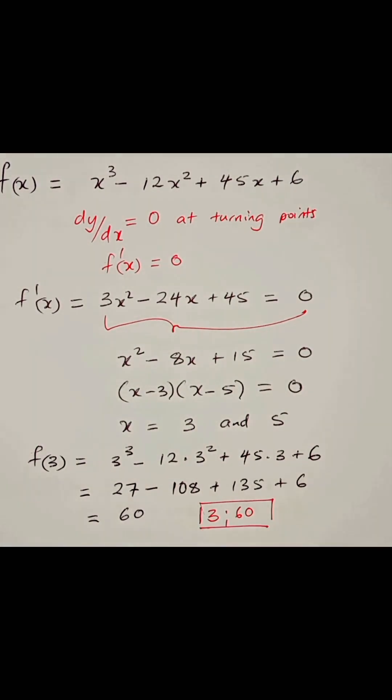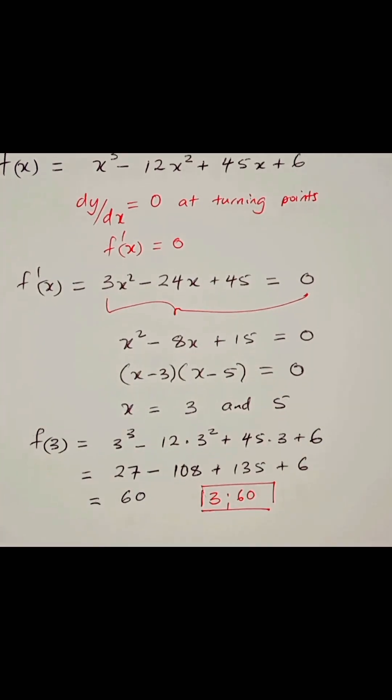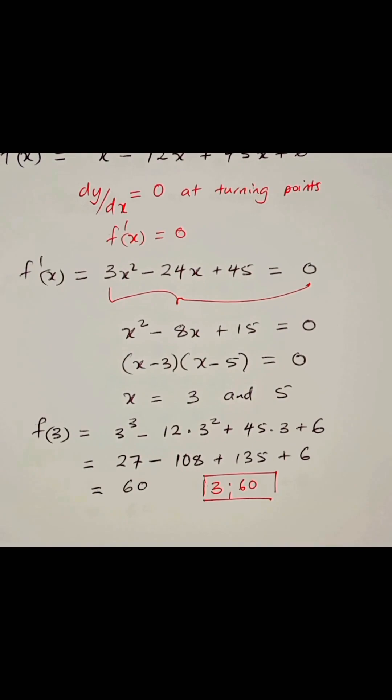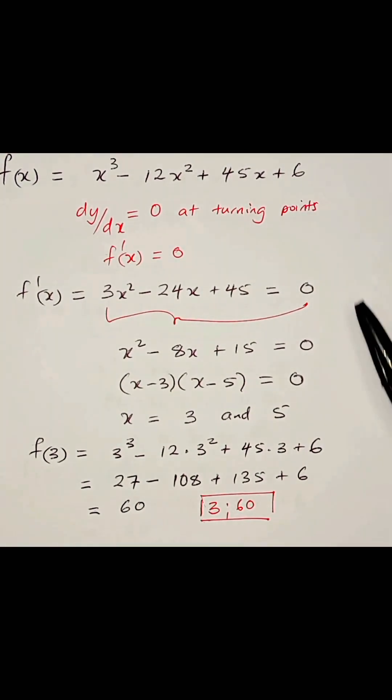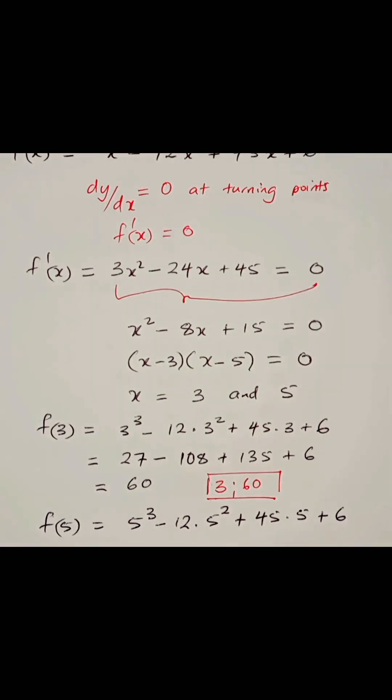So that's one of those turning points. Now, let's look for that turning point when x is equal to 5. So again, into the original function right here, you substitute 5. So we're looking for f(5). So we have f(5) is equal to 5³ - 12 × 5² + 45 × 5 + 6. Now, let's simplify that.